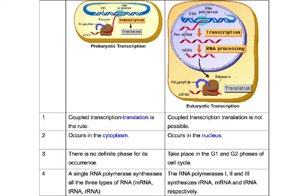In prokaryotes, coupled transcription-translation is the rule and occurs in the cytoplasm with no definitive phase. In eukaryotes, coupled transcription-translation is not possible; transcription occurs in the nucleus and takes place in the G1 and G2 phases. Please pause and have a look at this comparison.